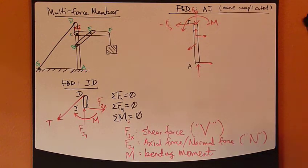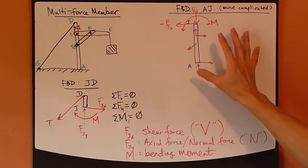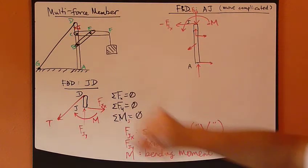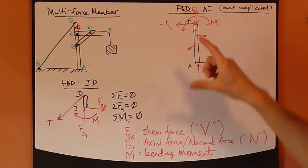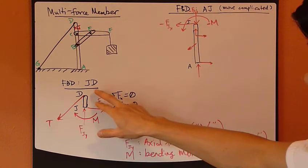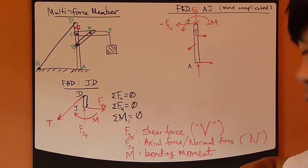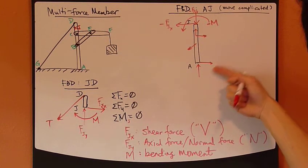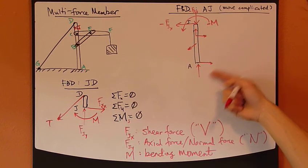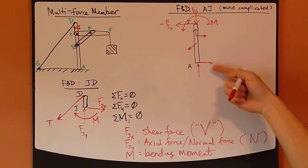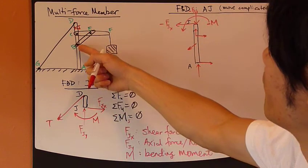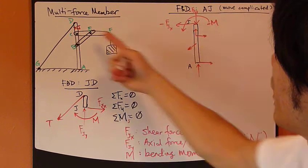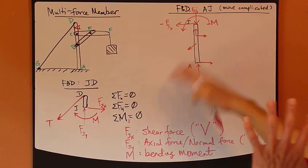What about this other section? Section AJ. If you look at the section, it's slightly more complicated than looking at this little section, but still doable. At A, you have these two reaction forces from the ground, same deal. And then you have this force from this piece, BE. And you have these two forces, reacting forces from this theta.